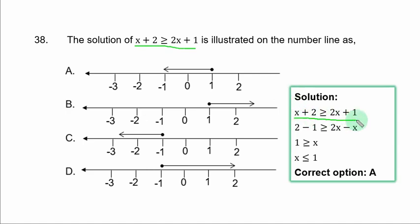you have to solve the inequality first. So, when you solve, you collect like terms, you have 2 - 1 ≥ 2x - x. If you subtract, you have 1 ≥ x. x is usually on the left-hand side. If you interchange the position of x and 1, the symbol of inequality also changes. So, if 1 ≥ x, then x ≤ 1.